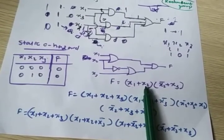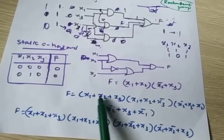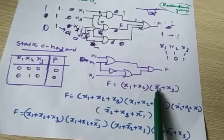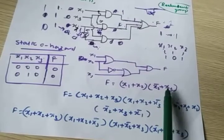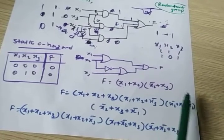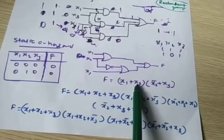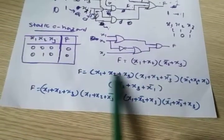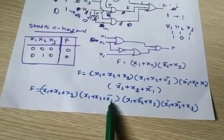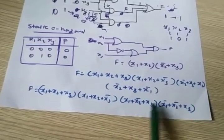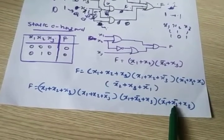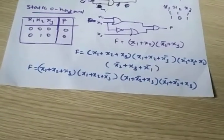For the term x1·x2, x3 is missing, so expand it as x1·x2·x3 plus x1·x2·x3bar. For the term x2bar plus x3, x1 is missing, so expand as (x2bar plus x3 plus x1) and (x2bar plus x3 plus x1bar). Now rewrite the full expression: (x1 plus x2 plus x3)·(x1 plus x2 plus x3bar)·(x1 plus x2bar plus x3), and then rearranging: (x1bar plus x2bar plus x3). Now map this into a K-map.